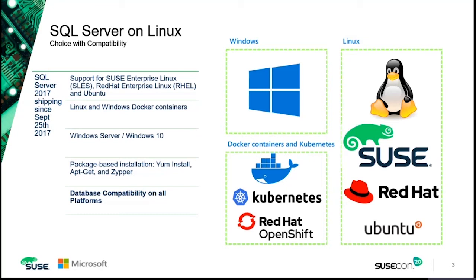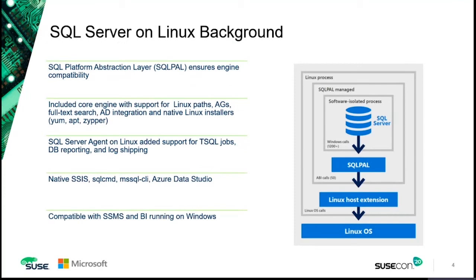So how did we bring about this database compatibility across platforms? On the right side, we have a complicated diagram. If you are interested to learn more about it, please read about Project Drawbridge on the Microsoft Research website. Suffice to say, the SQL Product Group worked with the Microsoft Research Team to create a component called SQLPAL, or Platform Abstraction Layer, which allows us to run the same SQL Server binary on Windows and Linux platforms. So when you run a query against SQL Server on Windows or Linux, it's the same binary executing it — it's going to compile, optimize, and execute exactly the same way, provided all the resources and other conditions remain the same.